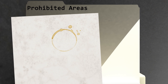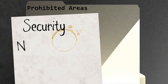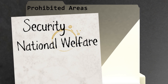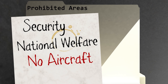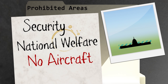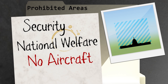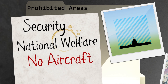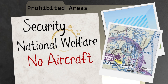Prohibited areas exist for security or other reasons associated with national welfare, where aircraft are not permitted to fly. This airspace starts at the surface and extends up to a specified altitude. On sectional charts, this airspace is depicted with a blue hashed shape. Inside the shape will be the letter P, followed by a series of numbers acting as the identifier of that particular area.